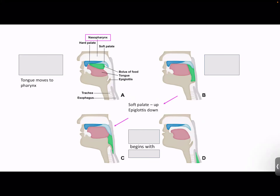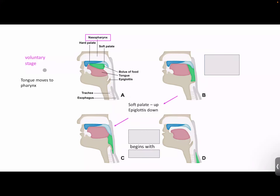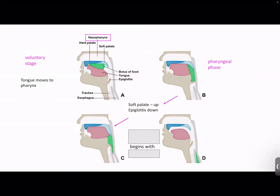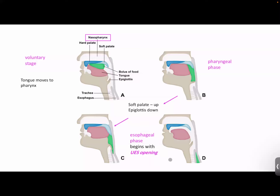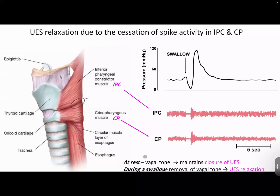Phase A is voluntary — oral or buccal. Phases B and C are the pharyngeal stage. And the last one is the esophageal stage, which begins with the upper esophageal sphincter opening. A sphincter is a ring-like muscle that contracts like a valve to stop anything from moving back. We don't want food to move from the stomach to the esophagus or back to the oral cavity — we want it to go down in one direction.